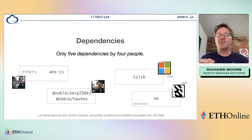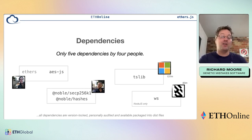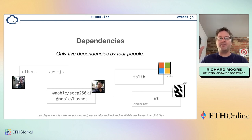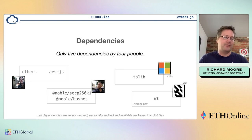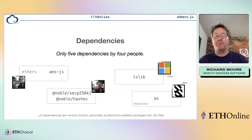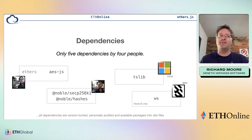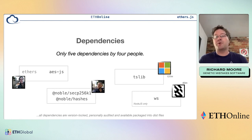The ws library has a crazy number of downloads and is only used in Node. Paul Miller, author of the Noble cryptography libraries, is a big security guy — his libraries are all audited. For ethers' own aesjs dependency, it's in the same security threat model. The goal is to reduce dependencies and also reduce the number of people responsible for those dependencies.